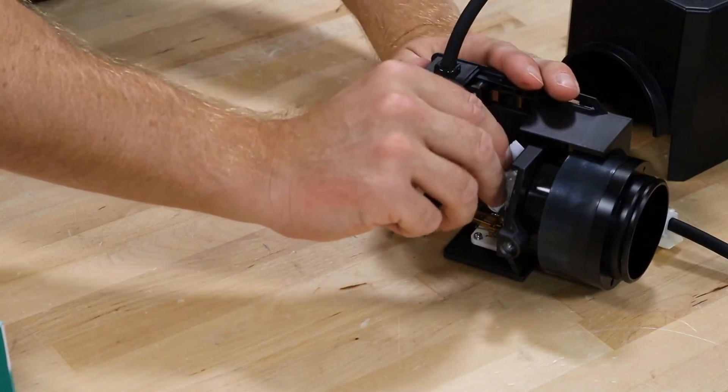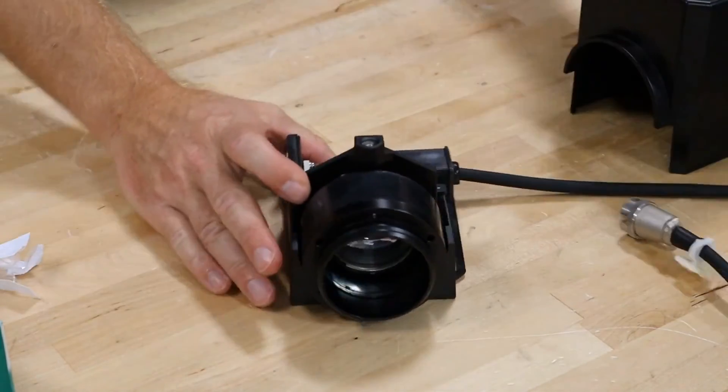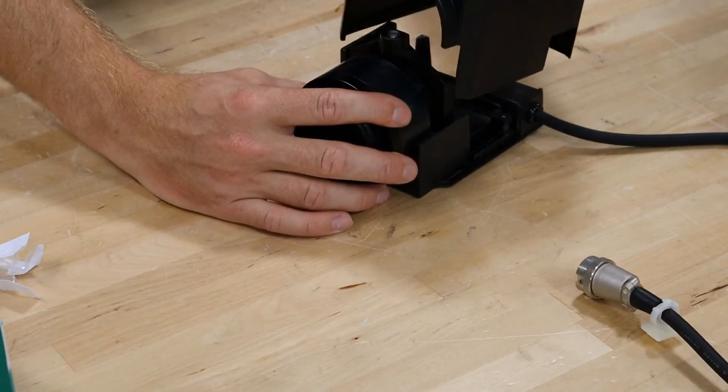After that, all you have to do is replace the cover, secure it with the screw, tighten everything up, and then reinstall your lamp house in the reverse order of the way you took it off.